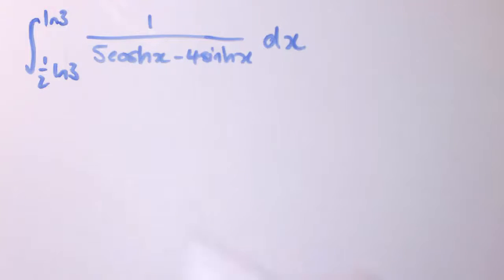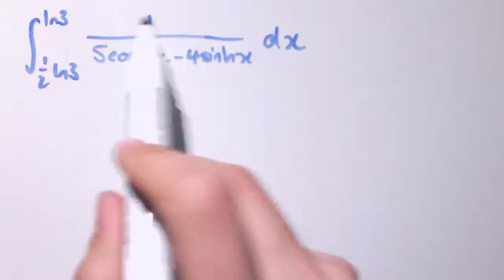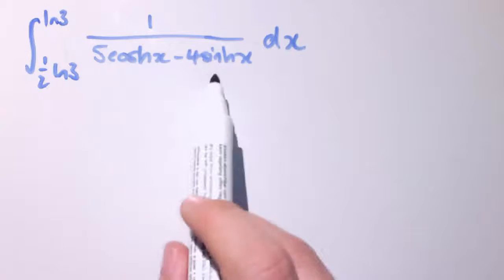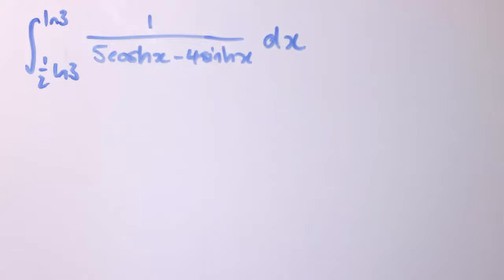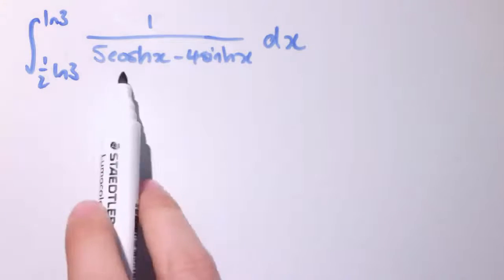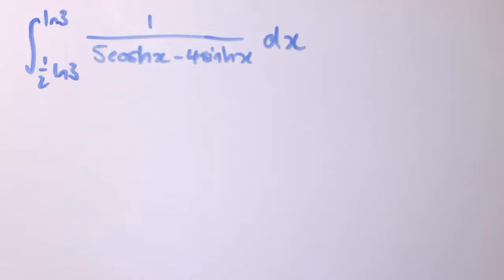Integrals like this work out in a similar way. I've got a definite integral here with limits of half ln(3) and ln(3), and 1 over 5 cosh(x) minus 4 sinh(x) dx. So the key here is to, again, rewrite the cosh(x) and sinh(x) in terms of their exponential forms.